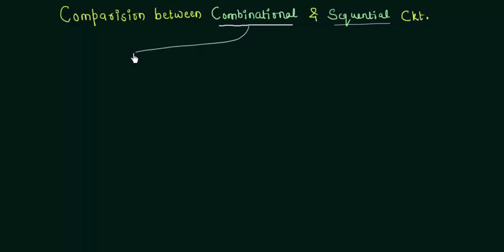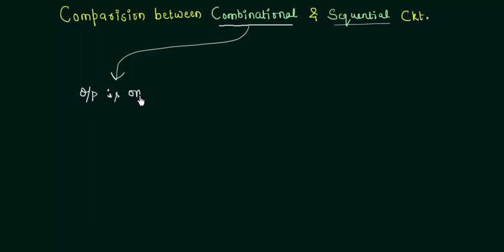A combinational circuit is one in which the output is only dependent on the present input. The output is only dependent on the present input.